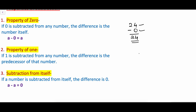For example, 15 minus 1 is 14. So if 1 is subtracted from any number, we get the predecessor of that number — 14 is the predecessor of 15. Property 3, subtraction from itself: if a number is subtracted from itself, the difference is 0. For example, 16 minus 16 is equal to 0.